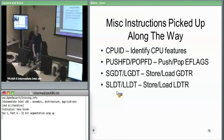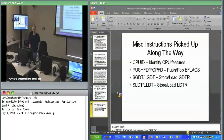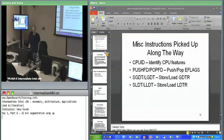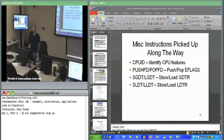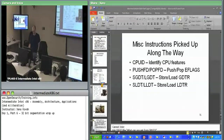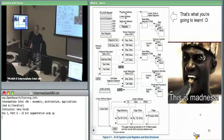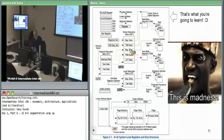Going back to earlier pictures: we know the EFLAGS register; we haven't yet seen control registers. Here you see the GDT — a segment selector points at some segment in the GDT. There's a large array and a GDTR which points at the base of the GDT. The segment descriptors in there can point to code or data segments, or to a TSS. You can also have an LDT descriptor in the GDT, which the LDTR indexes into.